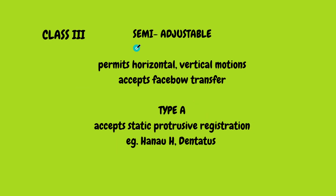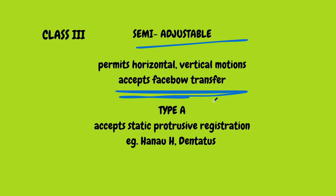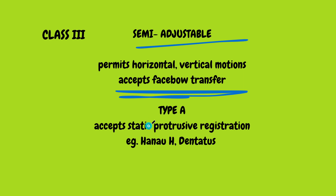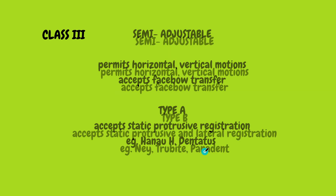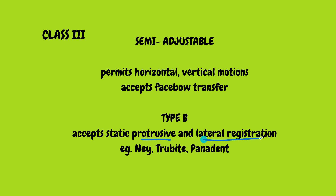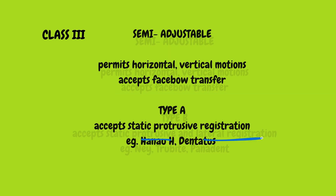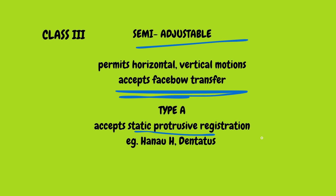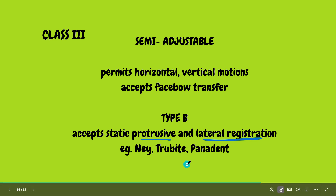Class 3 is semi-adjustable. It accepts face-bow transfer, which is a major advantage compared to class 1 and 2. It also permits horizontal and vertical motions. Type A and B are present in class 3. Type A accepts only static protrusive registration, whereas type B accepts both static protrusive and lateral registration — both eccentric movements. Examples for type A are Hanau-H and Dentatus; examples for type B are Whip-Mix, Truebyte, and Pana-Denta.